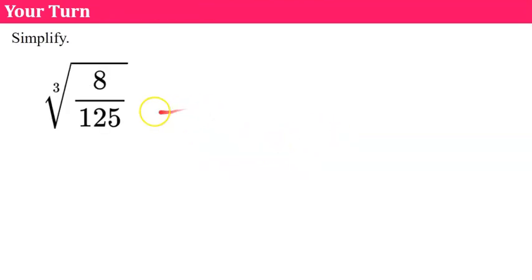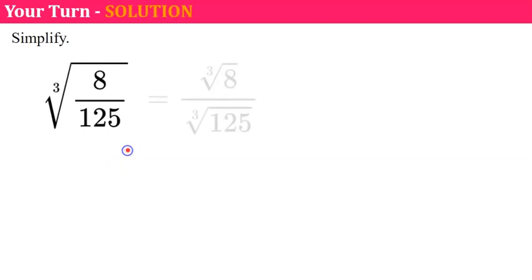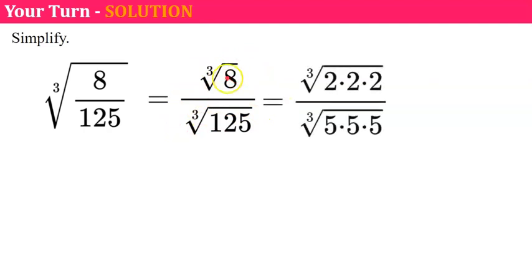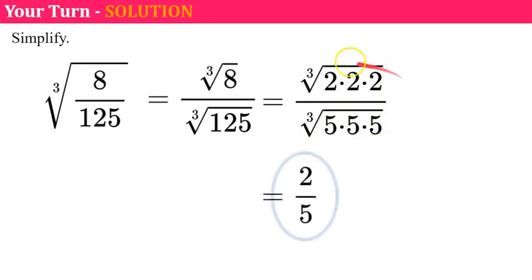Your turn — simplify the cube root of 8 over 125. Please pause and come back when you're ready. Welcome back. I'm going to find the cube root of my numerator, then the cube root of my denominator. The cube root of 8 is 2 times 2 times 2, so equal to 2. The cube root of 125 can be rewritten as 5 times 5 times 5, so the cube root of 125 is 5, giving a value of two-fifths.